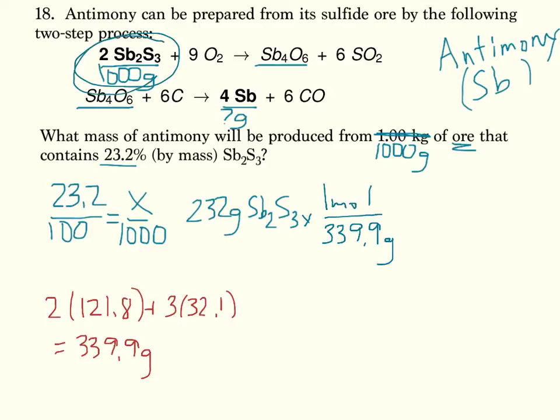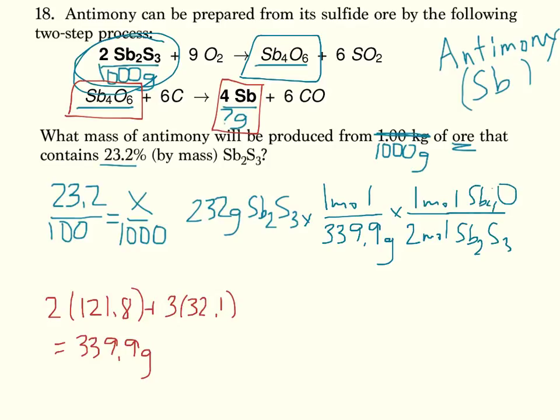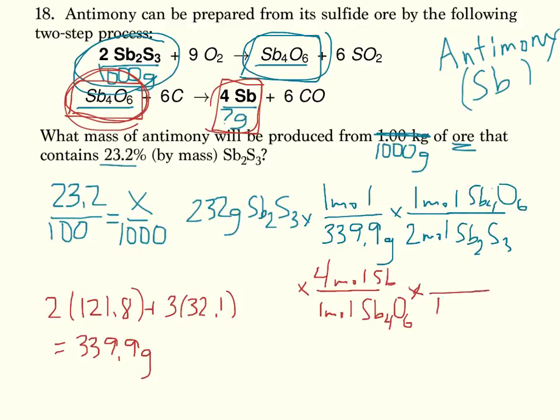Now that's this Sb2S3 again from the original reaction. I'm going to try to figure out how much Sb4O6 is produced so that then I can use that Sb4O6 in my second reaction to figure out how much Sb will overall be produced. That is 2 moles of Sb2S3 for every 1 mole of Sb4O6. That gives me to the end of the first reaction. For the second reaction, I'm going to take that same Sb4O6 and 1 mole of Sb4O6 will give me 4 moles of antimony, and then antimony, 1 mole of antimony is 121.8 grams of antimony, which overall, if you calculate it, gives you 166 grams of antimony.